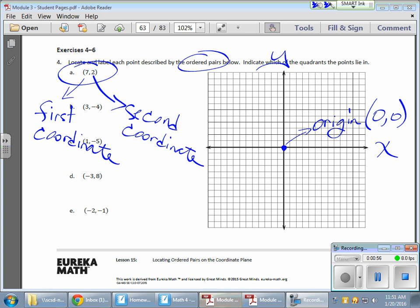And if I were to number these, here's my x-axis: one, two, three, four, five, and so on. And on the left side of my origin would be negative one, negative two, negative three, and so on.